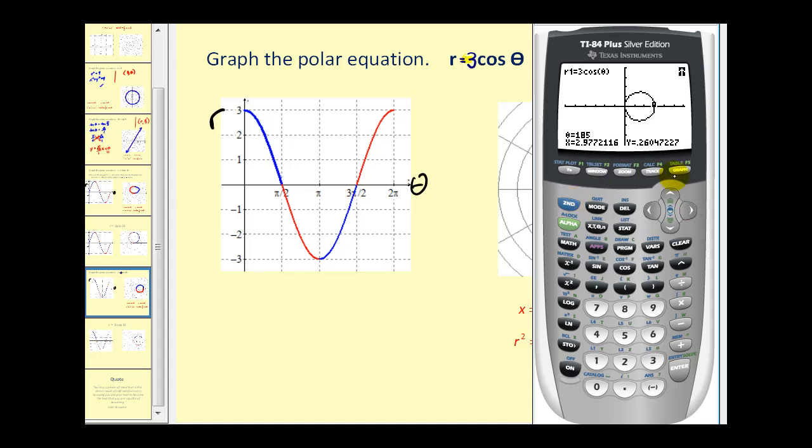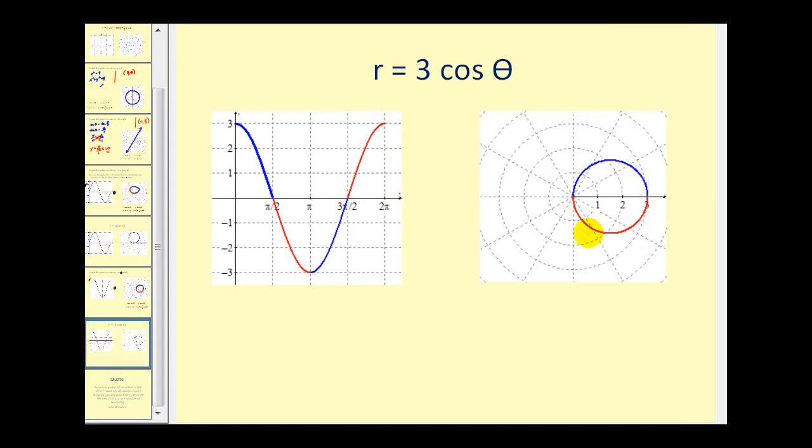Or of course, we can always go back to making a t table where we pick our theta and find the corresponding value of r. Here's a nice graph of what we just found.